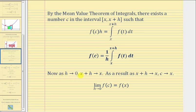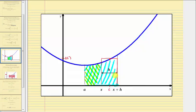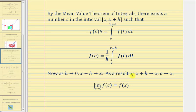Now, as h approaches zero, the quantity x plus h approaches x. Looking at this graphically: as h approaches zero, the quantity x plus h must approach x. As a result, as x plus h approaches x, c would also have to approach x, because c is in the closed interval from x to the quantity x plus h. Therefore we can say the limit as h approaches zero of f of c would have to approach f of x, and therefore this limit is equal to f of x.